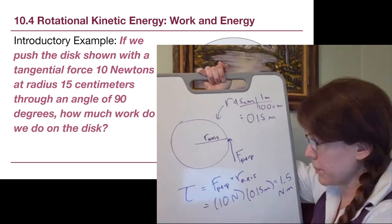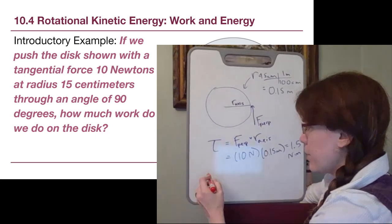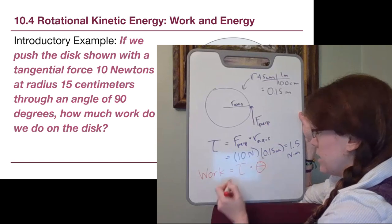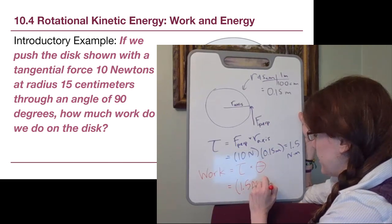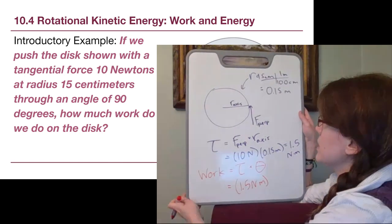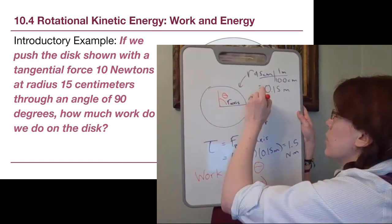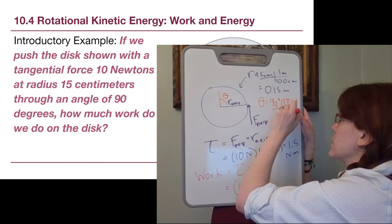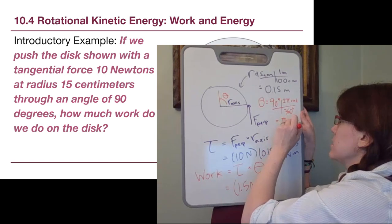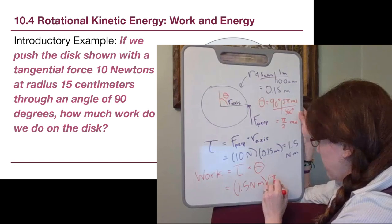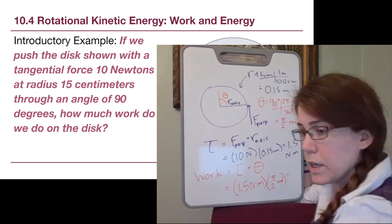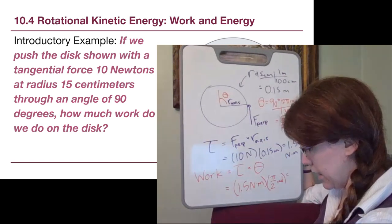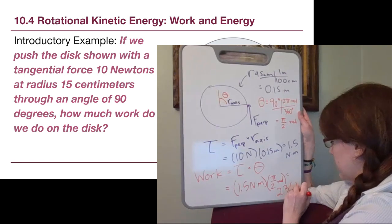The work from the previous slide: work in Chapter 10 is torque times the angular distance. In this case we have 1.5 Newton meters. Theta is 90 degrees, but we need to convert: two pi radians per 360 degrees gives pi over 2 radians. So 1.5 times pi over 2 radians gives us 2.36 joules.